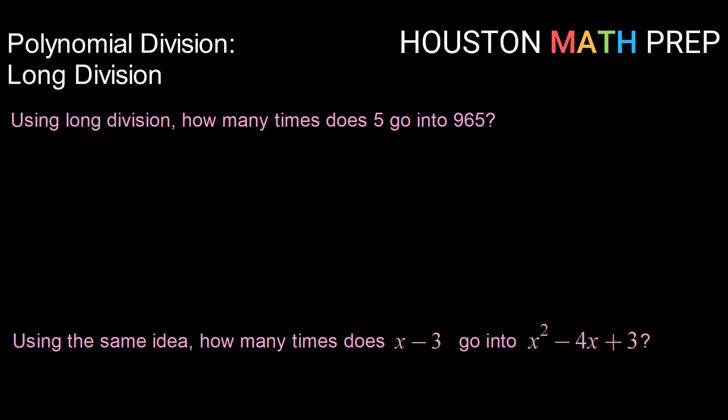To work that problem, we would take our division house bar there, take 965 and place that underneath. And then whatever we're dividing by, or our divisor, would go on the outside. So then we ask, how many times does 5 go into 9 evenly? 5 can go into 9 evenly one time. So we'll write 1 above and then multiply 1 times 5. Place that underneath and subtract. 9 minus 5 gives 4.